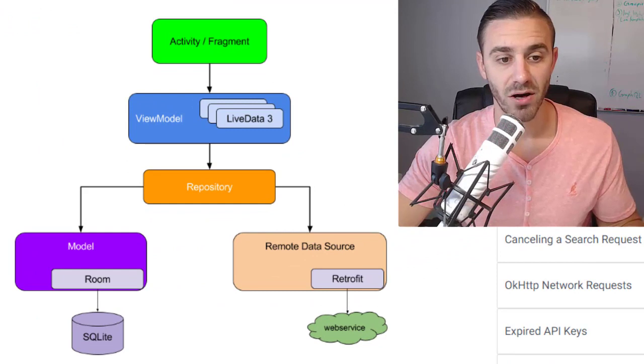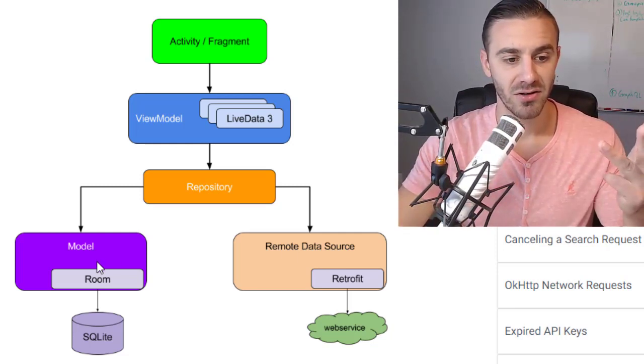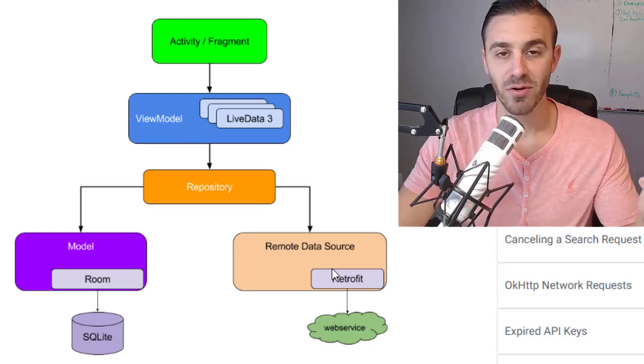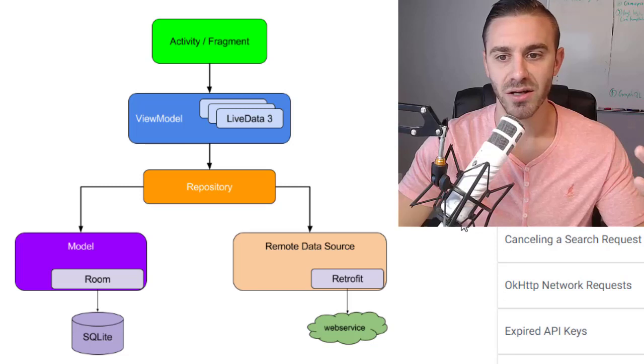MVI is basically MVVM — it follows the same sort of pattern. If you've watched any of my other courses, like my local database caching course or my MVVM introduction, you've seen me using MVVM and it's been pretty great. MVI is pretty much the same. You follow the same structure: you have your activities or fragments, your views, your view model which doesn't know anything about the fragments, your repository which doesn't know anything about the view model, and then your different data sources — SQLite database, the Room Persistence Library, and a remote data source. You still use different types of live data, mediator live data, and mutable live data.